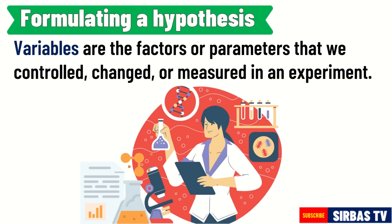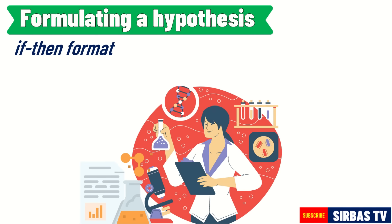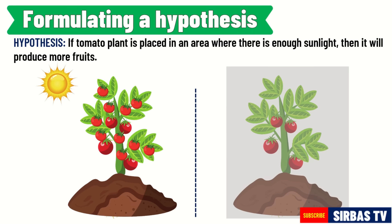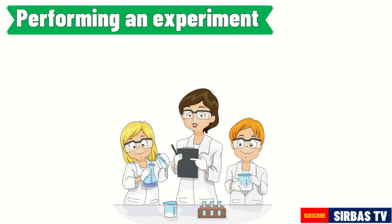A hypothesis is usually written in the if-then format. The hypothesis or possible answer to our question earlier is: if a tomato plant is placed in an area where there is enough sunlight, then it will produce more fruits. The next step is to test or verify our hypothesis.